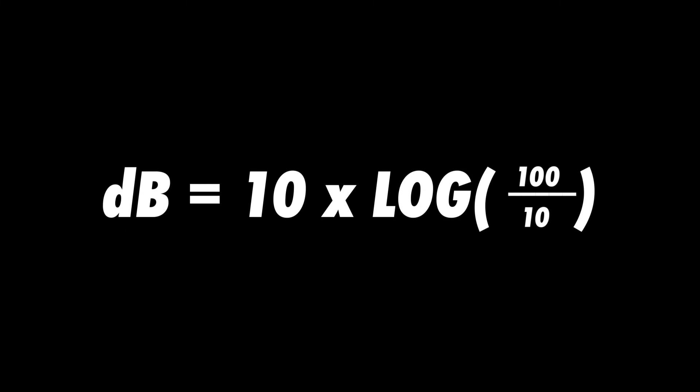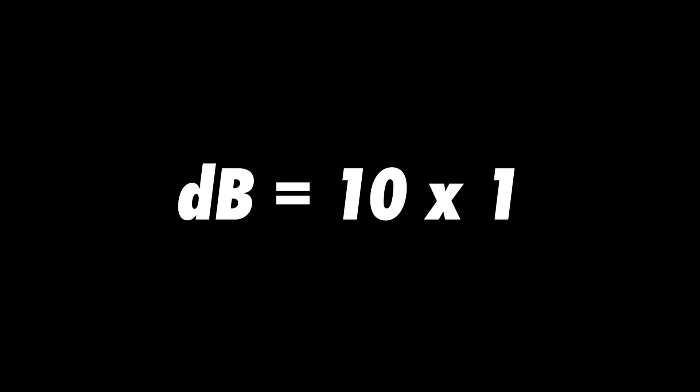Now that you know the formula used for calculating ratios in bells, let's adjust that formula to calculate ratios in decibels. For comparison, let's find the ratio of the same two power quantities as before — 10 watts and 100 watts — this time in decibels. The formula looks like this: divide 100 by 10 to find the ratio, which is 10. Use a calculator to find the log of 10, which is 1. Multiply 1 by 10, which is 10. Therefore, the ratio between 10 watts and 100 watts is 10 decibels, or 1 bell.